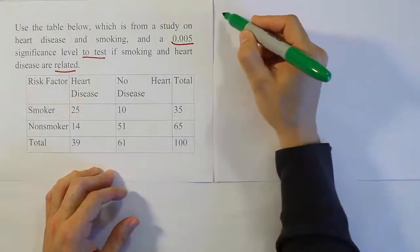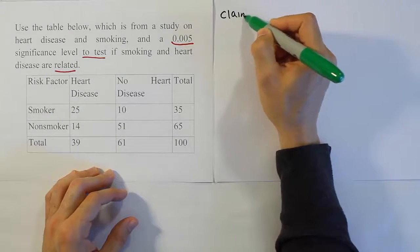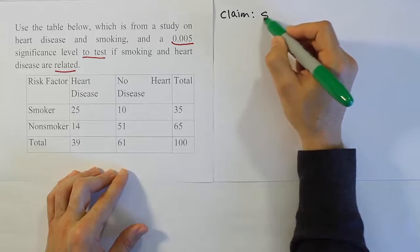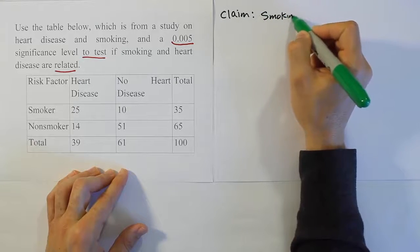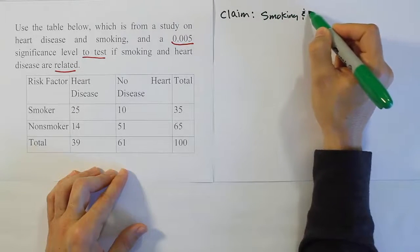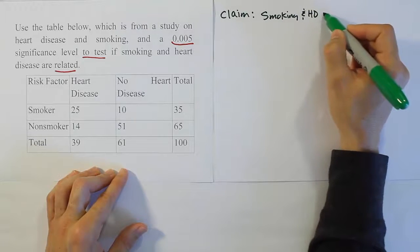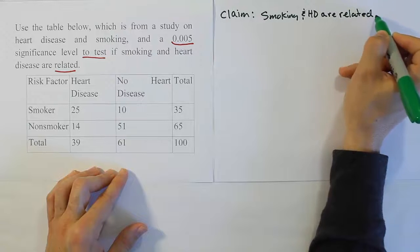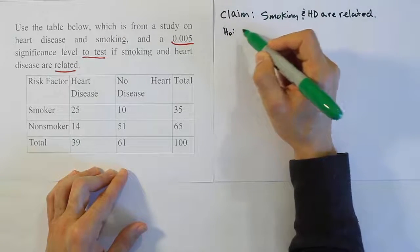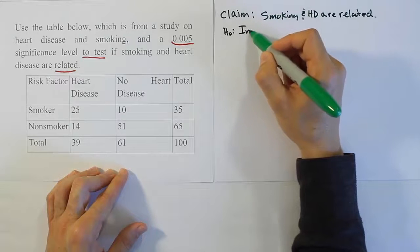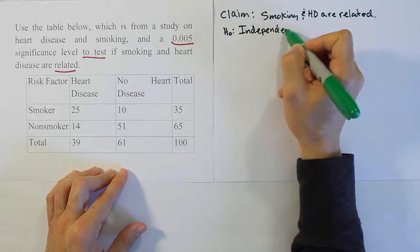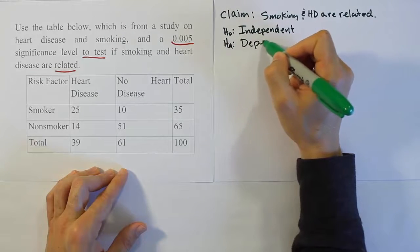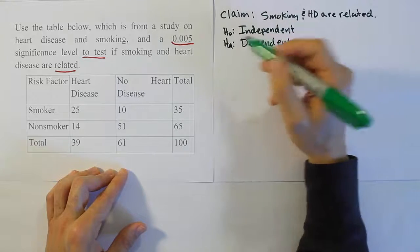Let's start with a claim for this problem. In this problem it's actually giving us HA as the claim, because it says that smoking and heart disease are related. That's another way of saying they are dependent upon one another. So let's start with H0, which says that the two categories are independent, and HA says that the two categories are dependent.